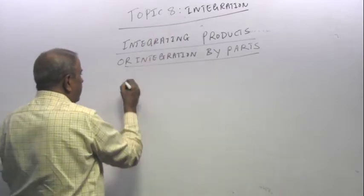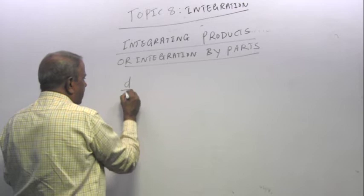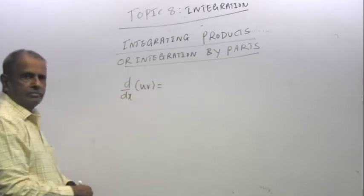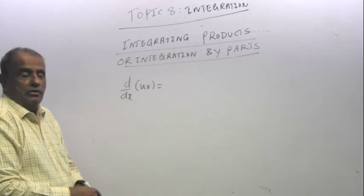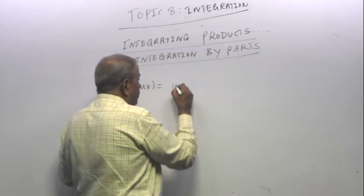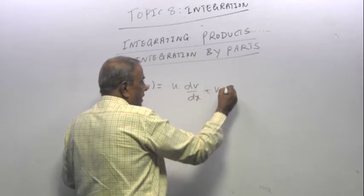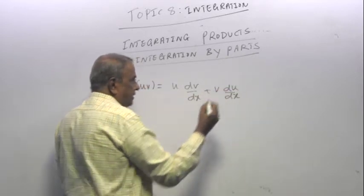To understand this, what is the derivative of uv? You know it is u dv/dx plus v du/dx.